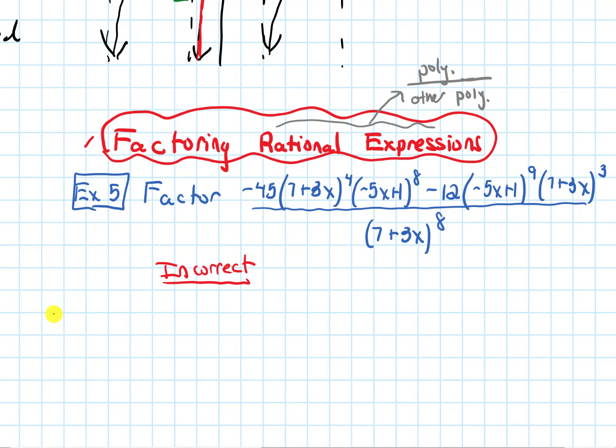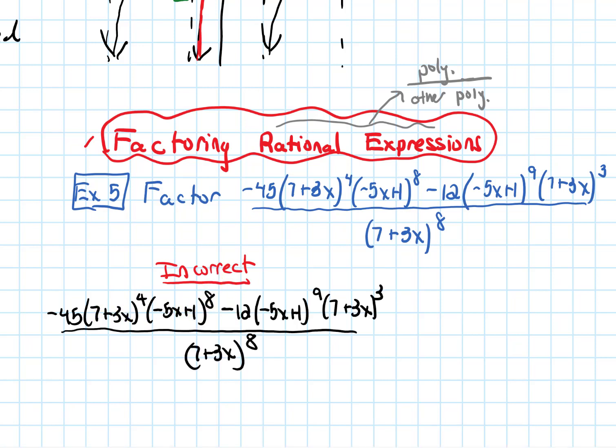So I'm just gonna copy the problem down one more time. We have -45(7+3x)^4(-5x+1)^8. The rest of this I'm gonna write quickly. Alright, so I've gone ahead and just written down the rest of it.